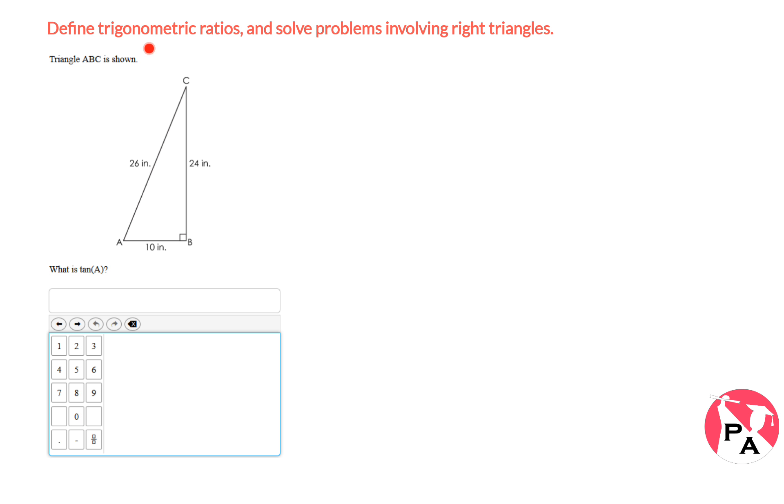So the question is about defining trigonometric ratios and solving problems involving right triangles. Here we have a right triangle. It's asking for us to find the value of tangent A. So this is a very basic question about trigonometry.